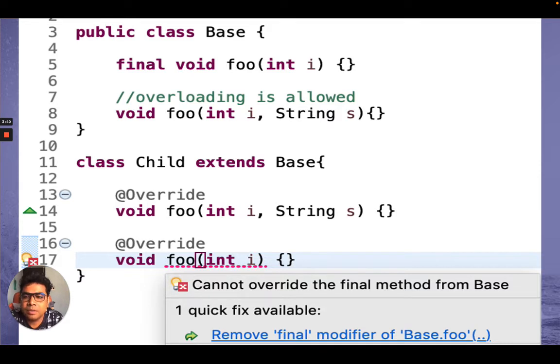Now in this example, you can see we have created a base class and the base class extended by a child class. There is a method of foo which is declared in the base class. If we try to overload that in the child class, then it will throw the compiler error.